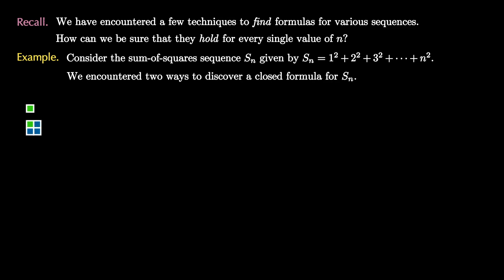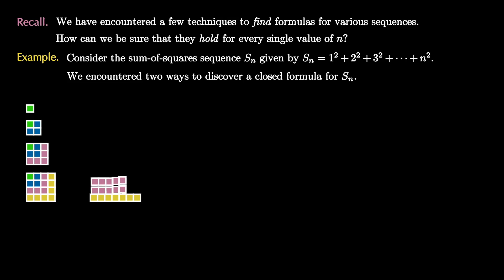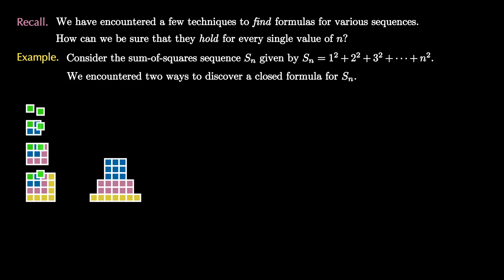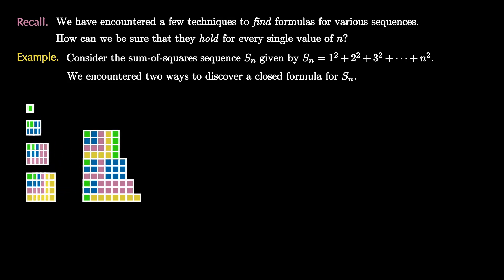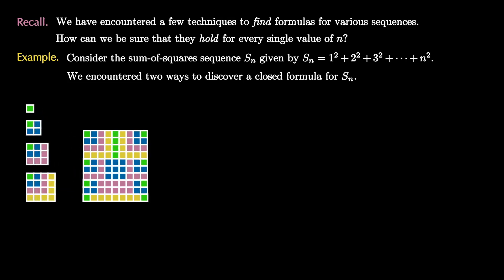We've encountered two different ways to discover a closed formula for s sub n. The first one, a so-called proof without words, uses the geometry of a stack of squares. We can use three copies of a stack of squares to create a rectangle — one copy creates a tower, another creates the left side, and another the right side. We used this rectangle to show that the sum of the first n squares equals n times n plus 1 times 2n plus 1, all over 6.